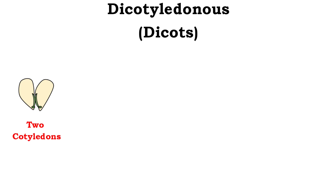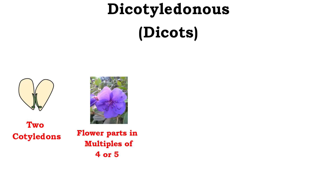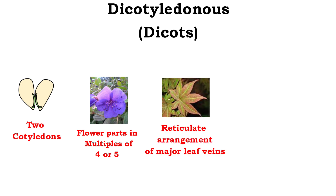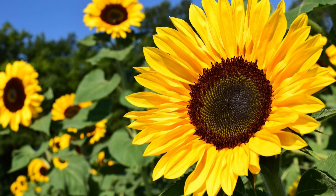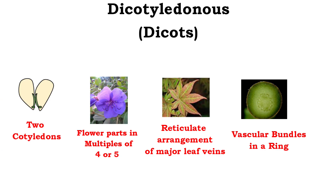Dicotyledonous plants have two cotyledons in the seed. Their flowers are tetramerous or pentamerous, meaning that their floral parts or petals are either in multiples of four or five. Dicots have a reticulate arrangement of major leaf veins. They have three pores in their pollen, and their arrangement of vascular bundles in the stem resembles concentric circles. Dicots most likely do have secondary growth, although there are a few exceptions.